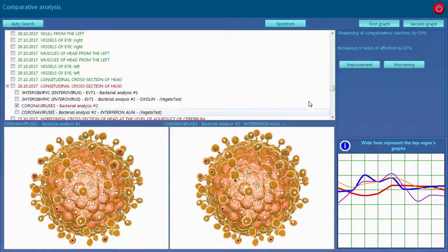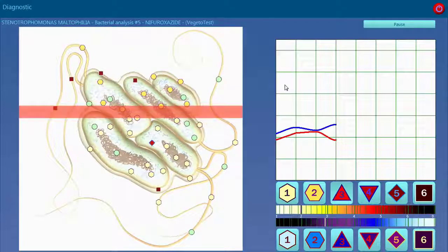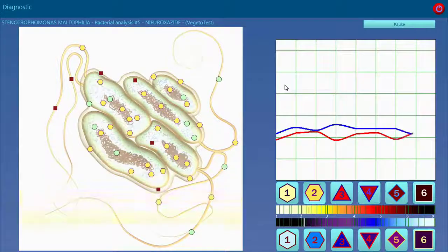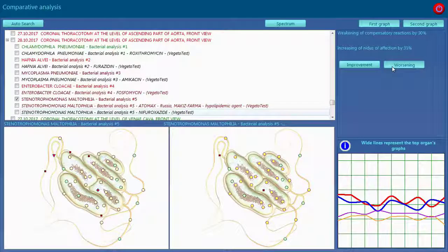The method of computer analysis and evaluation of microorganisms activity and resistance to antibacterial preparations developed by the Institute of Practical Psychophysics meets all modern requirements.